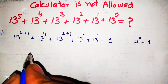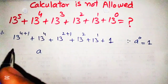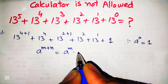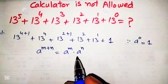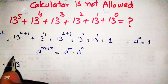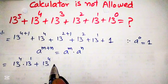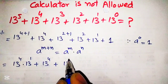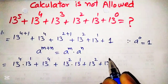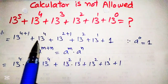Now we will use the basic mathematical formula: a raised to power m plus 1 equals a raised to power m into a raised to power 1. Using this formula, we rewrite the equation as 13 raised to power 4 into 13 raised to power 1 plus 13 raised to power 4, plus 13 raised to power 2 into 13 raised to power 1 plus 13 raised to power 2, plus 13 raised to power 1 plus 1.